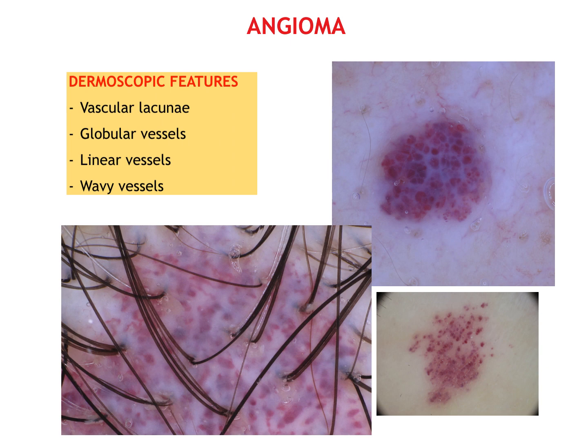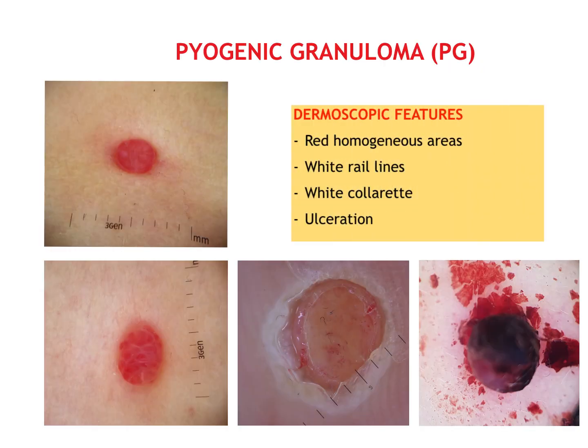Cutaneous angioma is usually easy to diagnose. Dermoscopy typically shows multiple vascular lacunae, even if glomerular vessels or linear and wavy vessels can be found. Regarding pyogenic granuloma, most lesions present the same dermoscopic features as angioma, also known as red homogeneous areas. White ray lines, white collarette and ulceration can sometimes be detected.